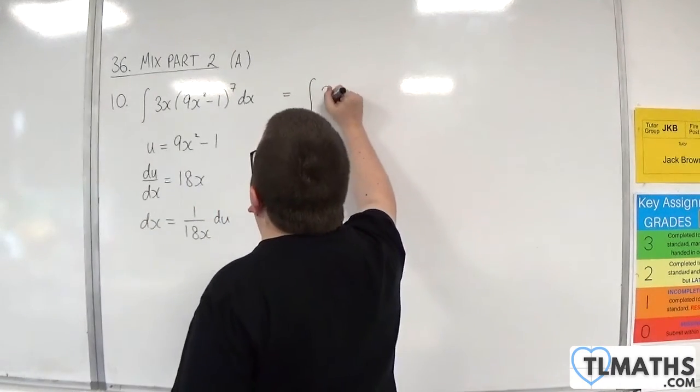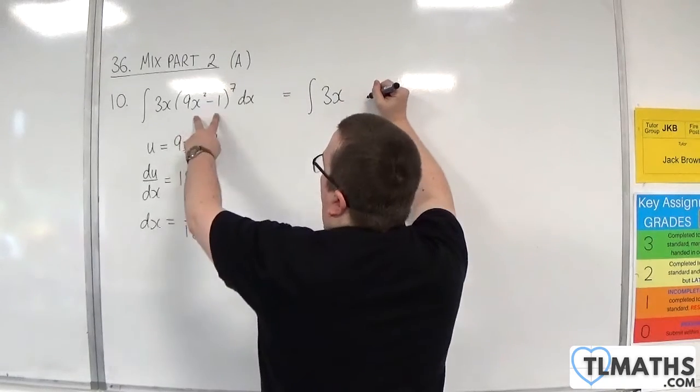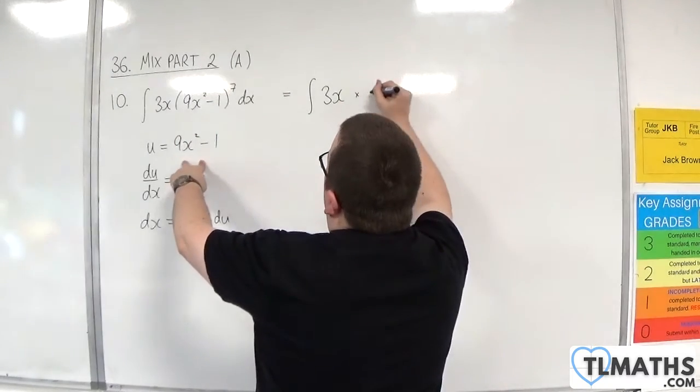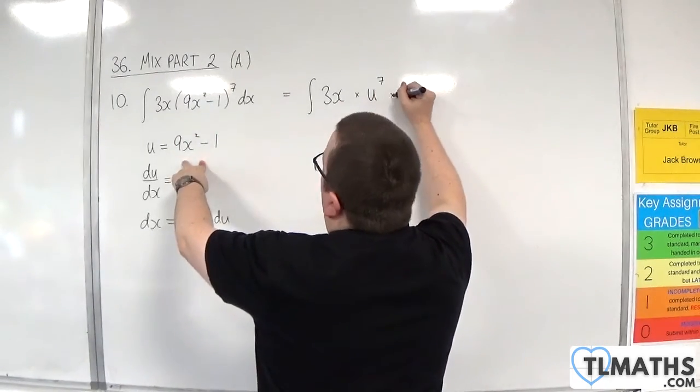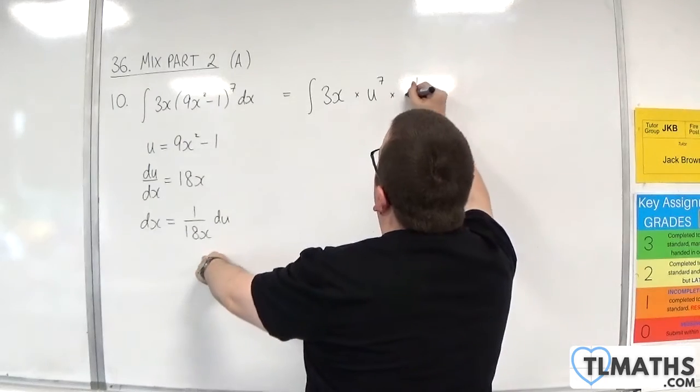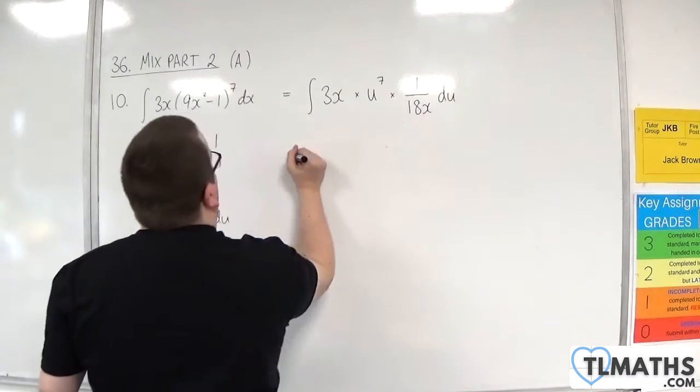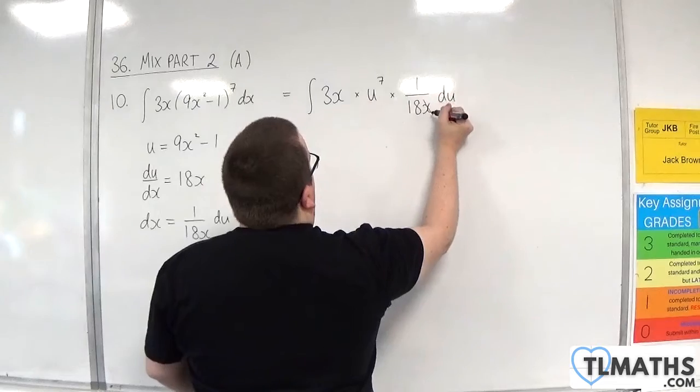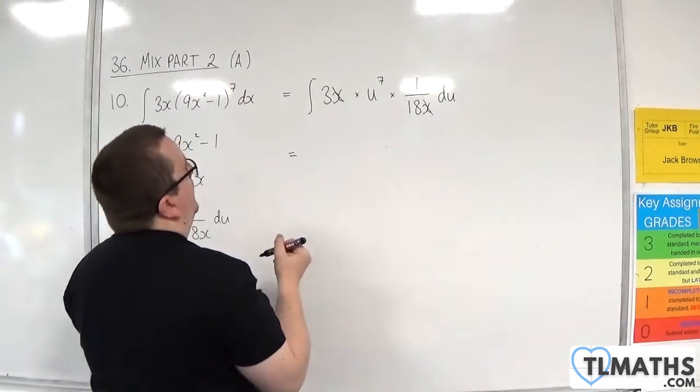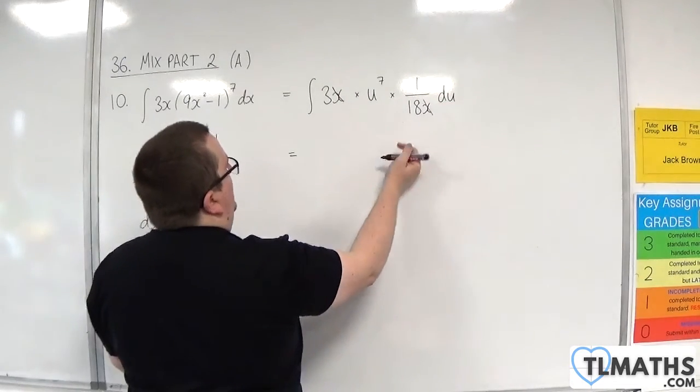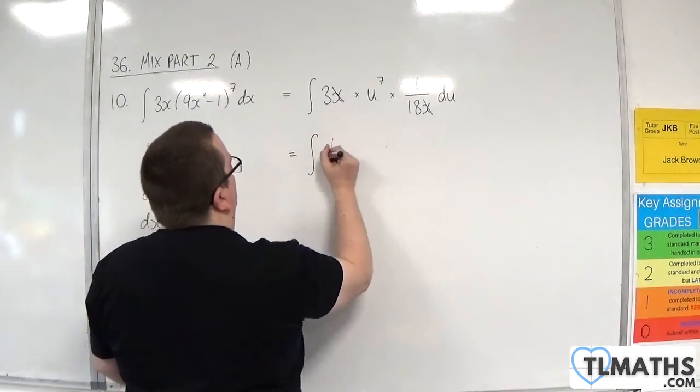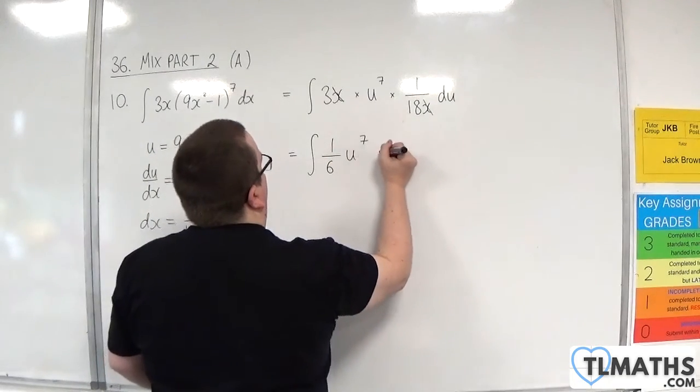So we've got the integral of 3x, then the 9x squared, take away 1, is u. So u to the power of 7. The dx I'm replacing with 1 over 18x du. Now the x there will cancel with that one. So we have 3 over 18, which is 1 over 6. u to the 7 du.